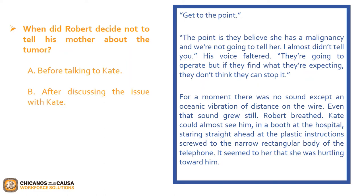Now that we read example one, let's answer the presented question. The question asks: when did Robert decide not to tell his mother about the tumor? Is it A, before talking to Kate, or B, after discussing the issue with Kate? If you selected A, before talking to Kate, you are correct. We can find evidence of this in the second to last paragraph: 'The point is they believe she has a malignancy and we're not going to tell her. I almost didn't tell you.' This tells us that Robert had already decided to not tell his mother before talking to Kate, not afterwards.